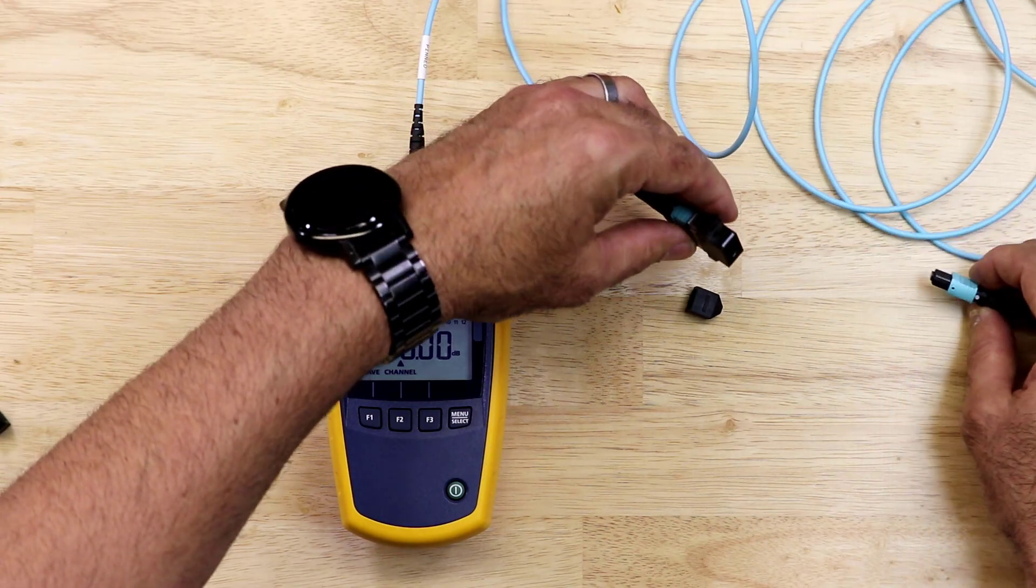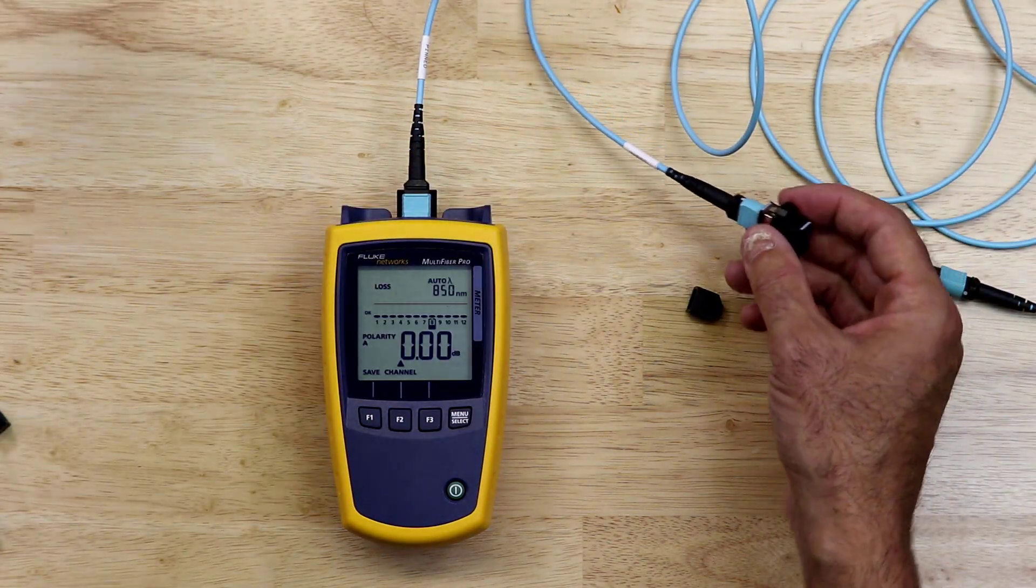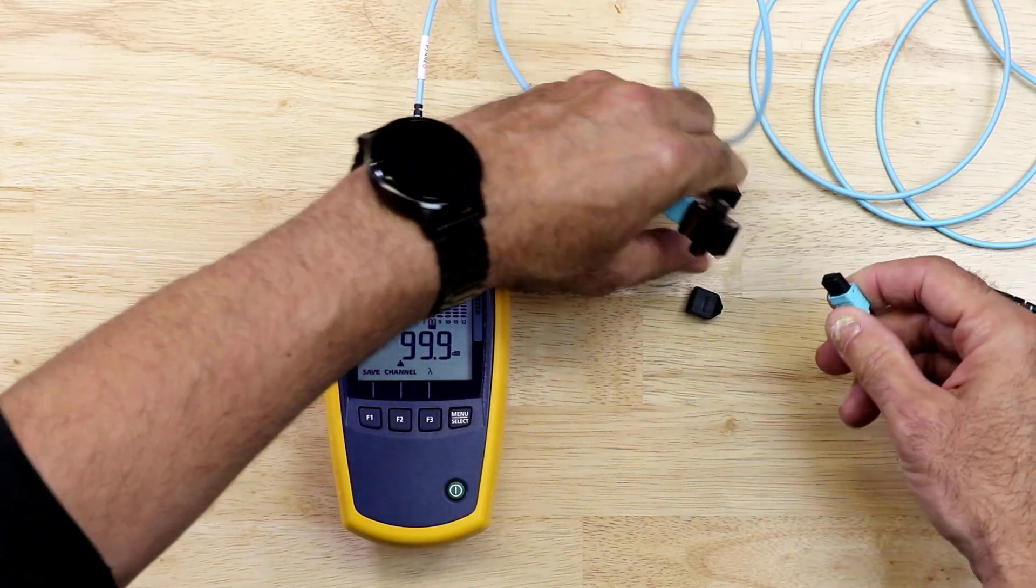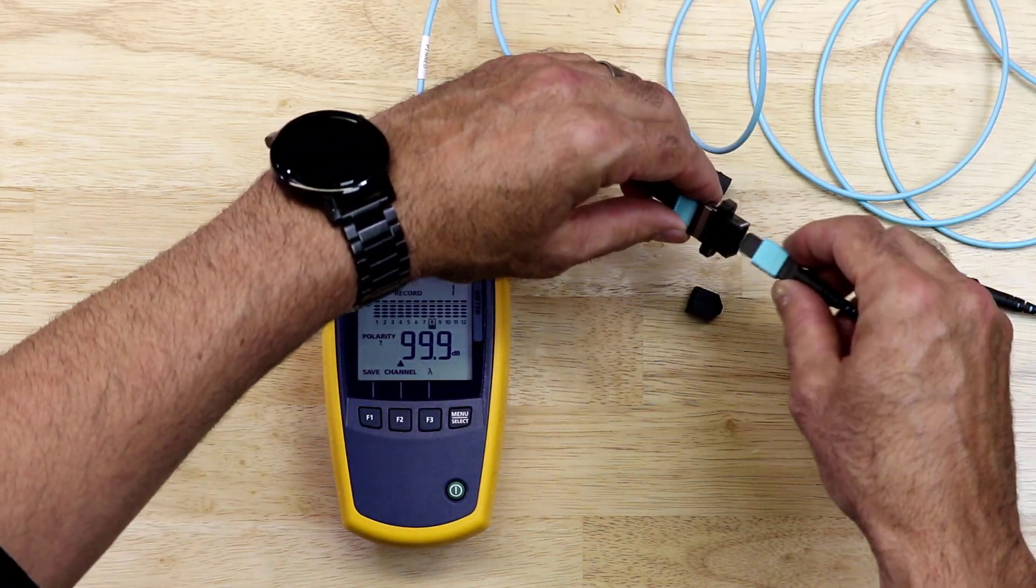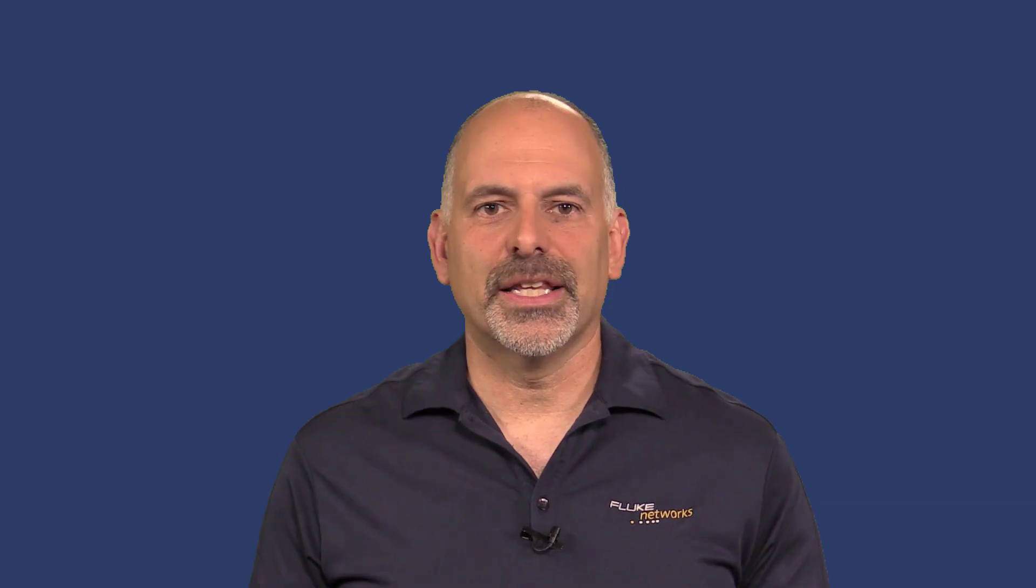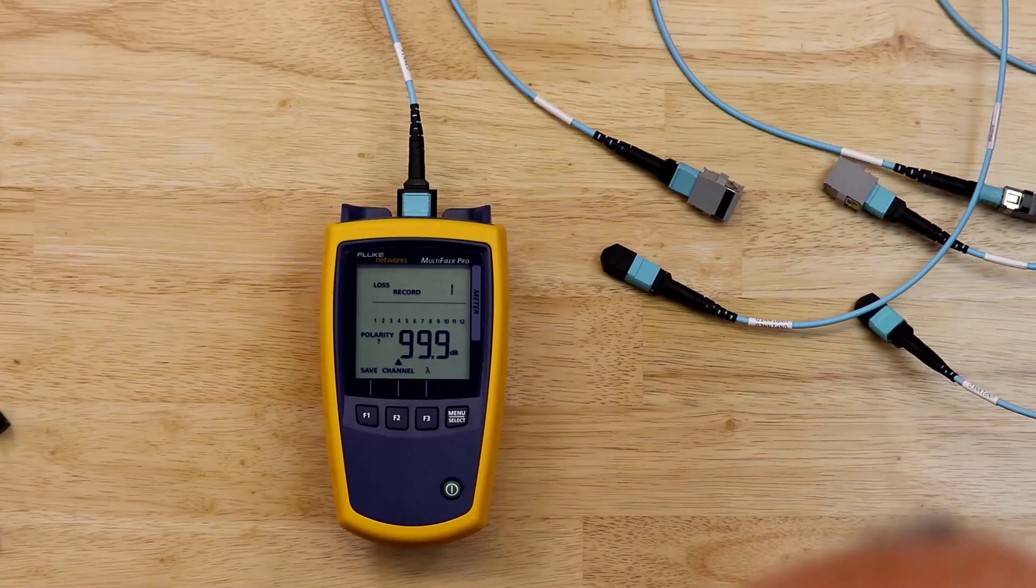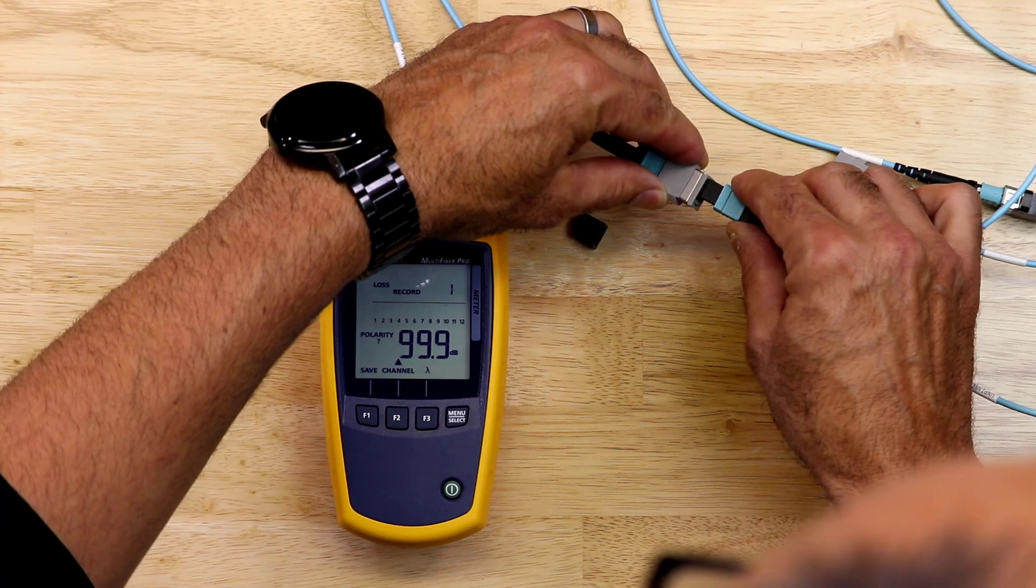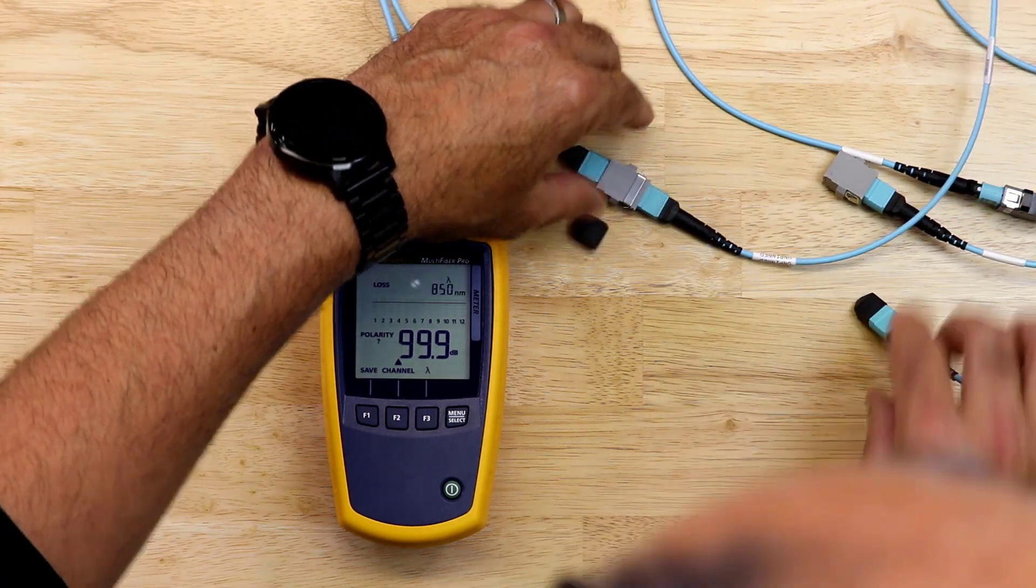After setting the second reference, I will disconnect the meter and the light source at the bulkhead connector. I'll connect the short, unpinned to unpinned test cable to the light source bulkhead connector. This gives me two unpinned connectors to connect to my pinned to pinned trunk cable. Upon connecting the light source and the meter to the link I wish to certify, the meter will begin measuring the loss.